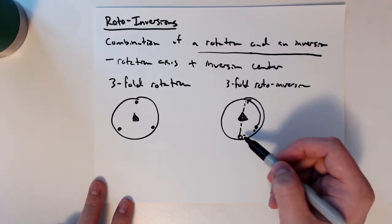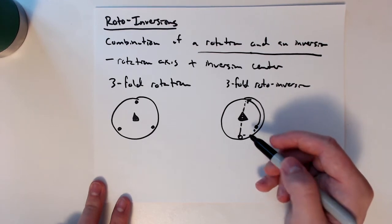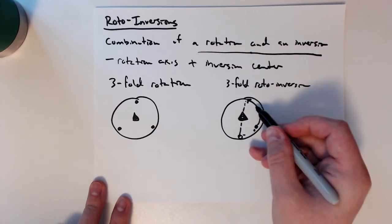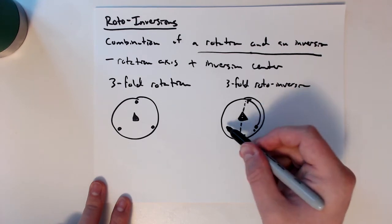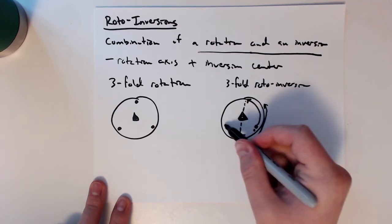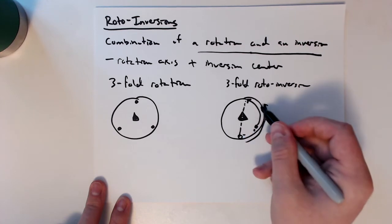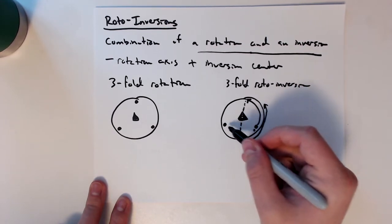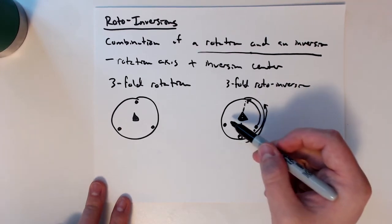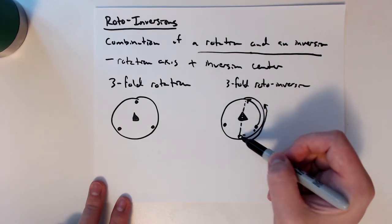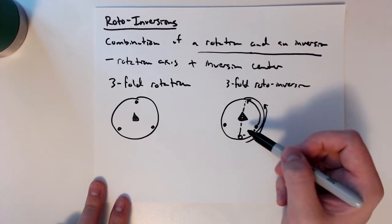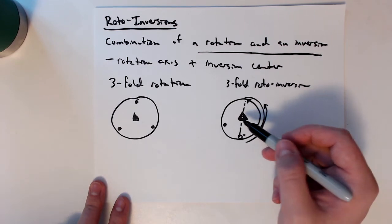So this would be my first point. Then I can do another rotation of 120, which would put me somewhere right here, and then I would go through the inversion. 120 degrees rotation and then invert. Since I'm negative, I'd still be negative here, so this is going to be a plus over here. That's my second and third point. So: rotation, inversion, rotation, inversion. I can keep doing that until I complete the diagram.